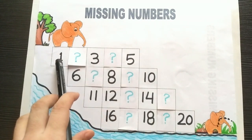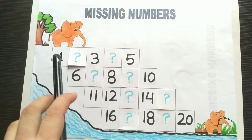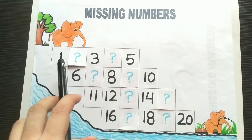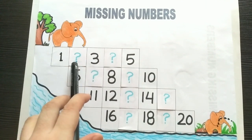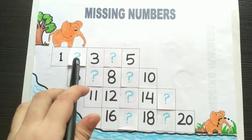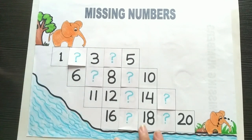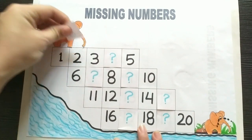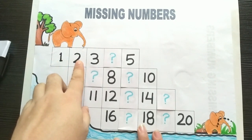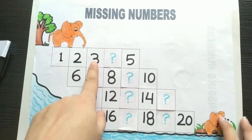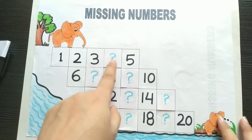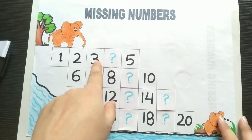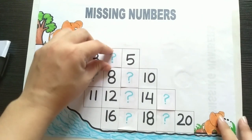Alright children, you have to tell me the first number. What is the first number here? This is number one. And what is the missing number here? What comes after one? After one is number two. Yes, after two is number three. After three is number, what is the missing number here? What comes after three? After three is number four.